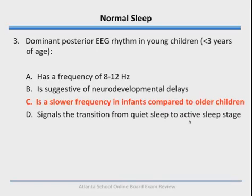In infants, this dominant posterior EEG rhythm is in the theta range. This dominant posterior EEG rhythm is actually the rhythm of eyes-closed awake — the same as what we typically call alpha in adults, which you look for to indicate eyes-closed wakefulness as they drift into stage 1 sleep.